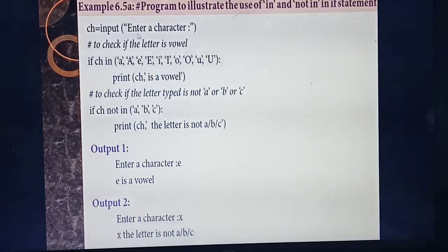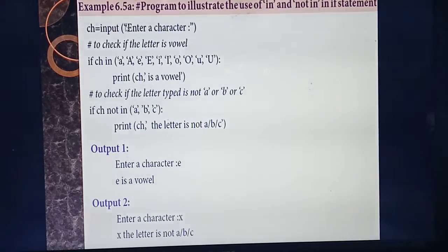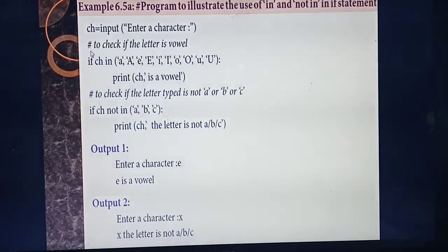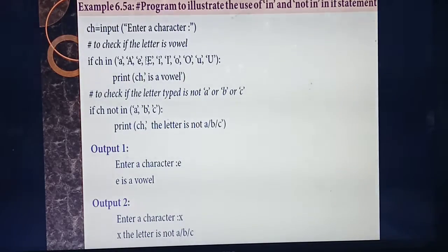Inside the `input()` function, you give the prompt: 'Enter a character'. The `input()` function starts with an open bracket, then the statement inside double quotes, then ends with a colon inside the quotes, then closes the bracket. You are asking the user to enter a character. Lines written with the hash symbol are comment lines — no need to study those.